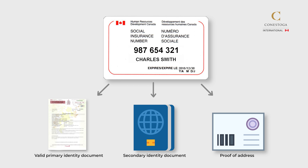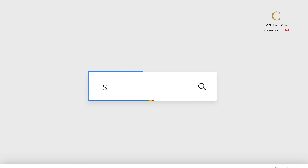Provide a document that confirms the address indicated on your online SIN application. A supporting document may be required if the name indicated on the primary or secondary document is different from the name you're using to apply for the SIN. Once you've gathered all these documents, you can apply online.